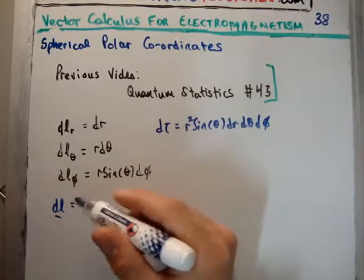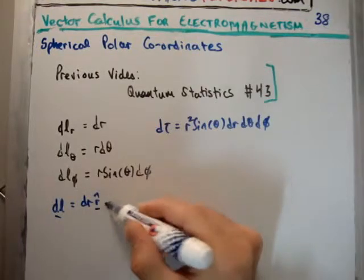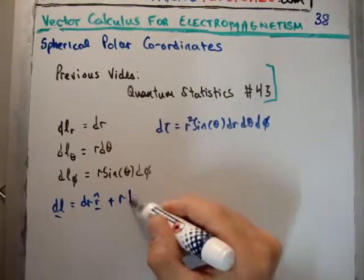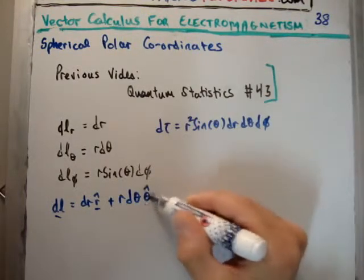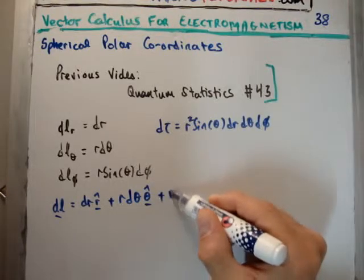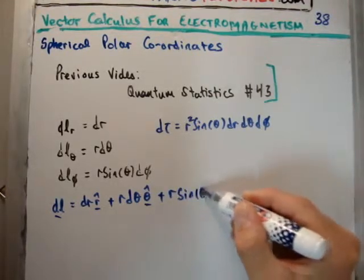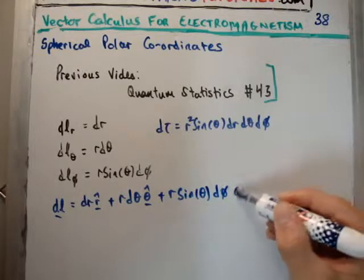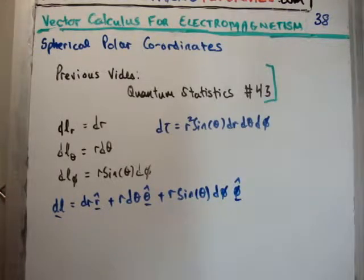And finally, infinitesimal length, or change in length, let's call it a vector, they're all vectors. It's going to be dr in the r hat direction, plus r d theta in the theta hat direction, plus r sin theta d phi in the phi hat direction. That's the infinitesimal change in length.